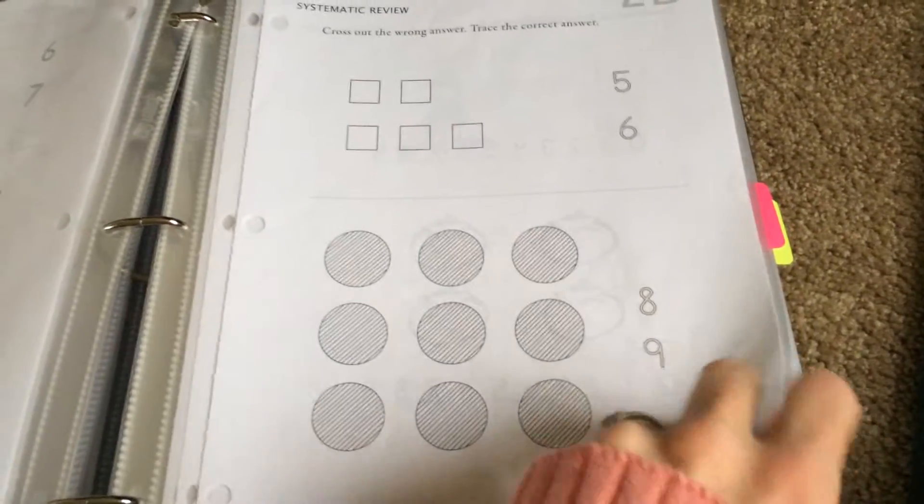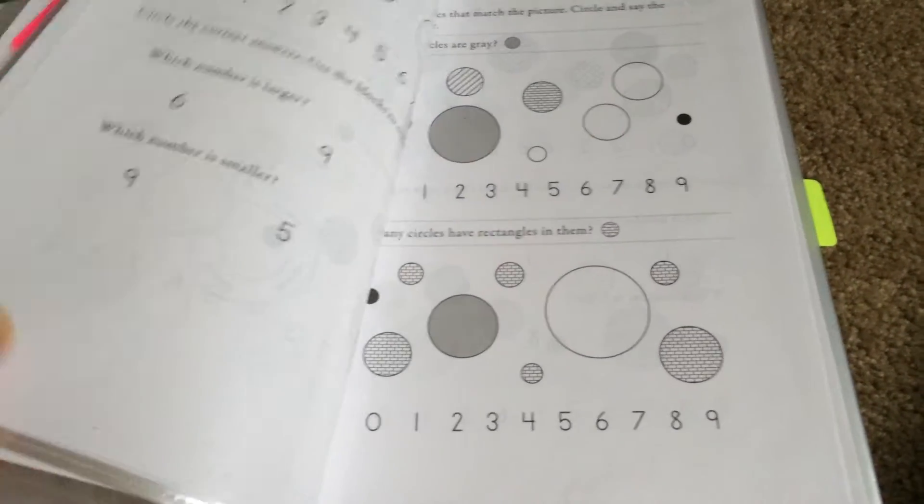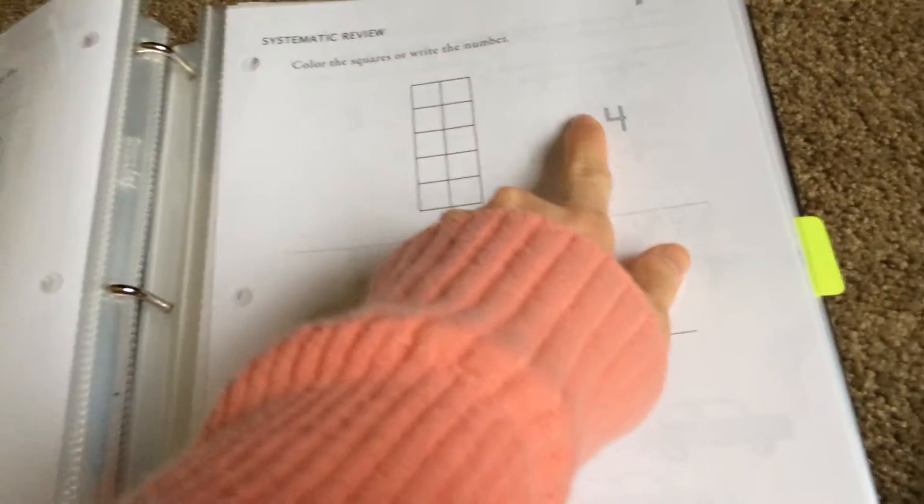They get into tracing it, and then they use other objects, and they cross out the wrong answer. So they get into shapes, and then they will be writing some numbers on their own. There's one where they count them, and they write it. And if the number's given, then they trace it, and they color in the squares.